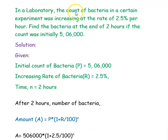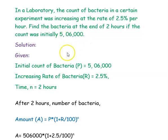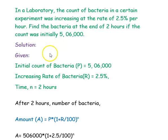The next example: in a laboratory, the count of bacteria in a certain experiment was increasing at the rate of 2.5% per hour. Find the bacteria count at the end of 2 hours if the initial count was 5,06,000. Here the rate is per hour and the time is also in hours, so we can directly apply the compound interest formula.